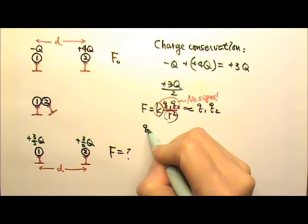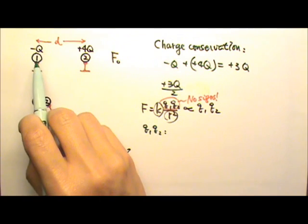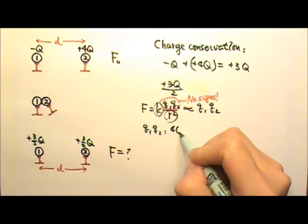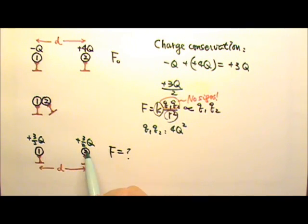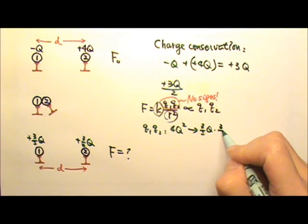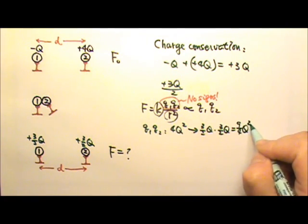So let's see. q1 times q2 used to be 1q times 4q, so it's 4q squared. At the end, it is 3 halves q times 3 halves q, which means it's 9 fourths q squared.